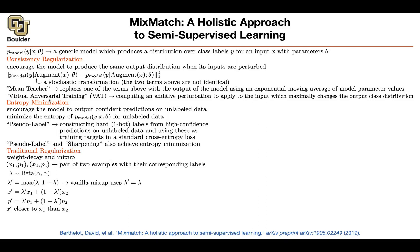A quick recap of mean teacher and virtual adversarial training. We can put both of them under this umbrella: you have an image, you augment it — perhaps you rotate it, translate it, or add noise to it. You do the same thing to the same image, perturbing it using a different perturbation or augmentation strategy. This gives you two different images that are basically the same image. If you have a model giving you labels for these two pairs of images, their corresponding labels need to be consistent.